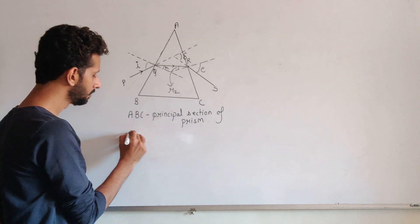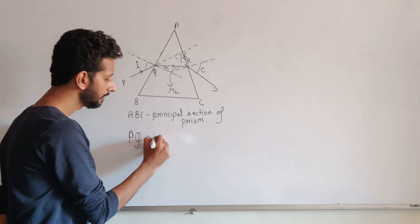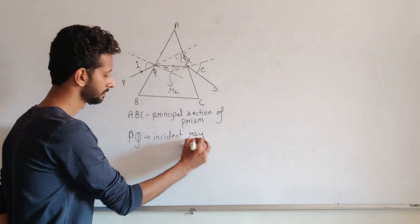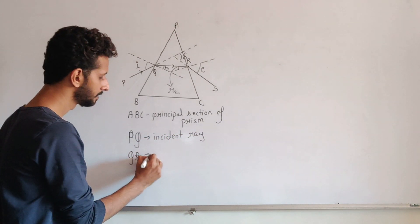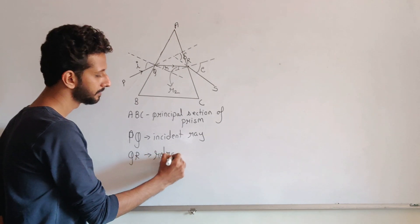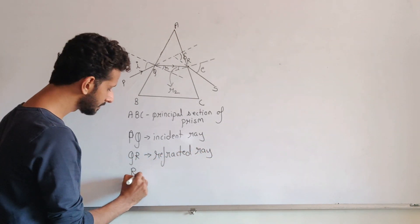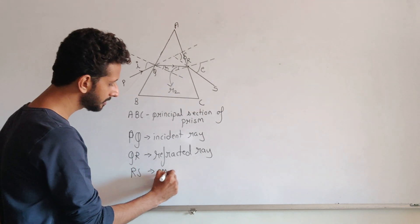The normal is the normal. TQ is your incident ray. QR is the refracted ray.